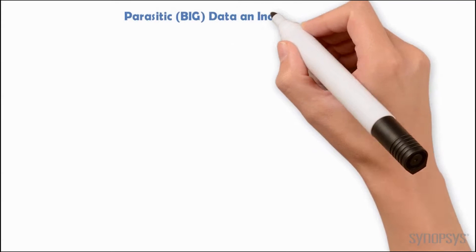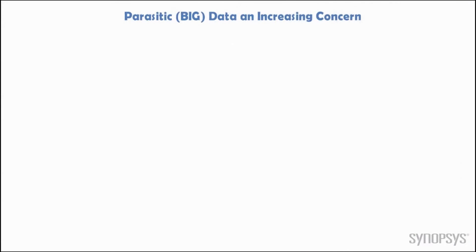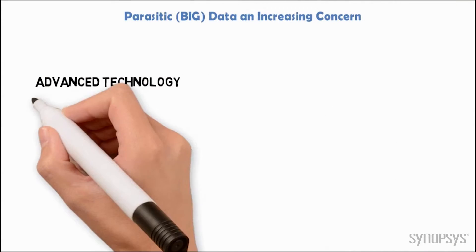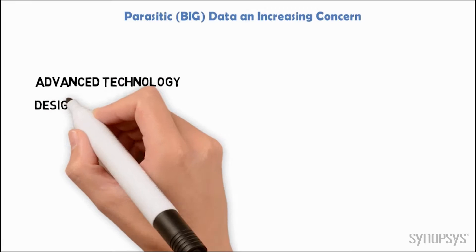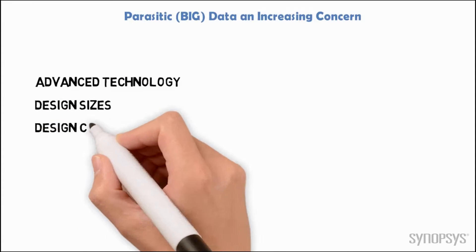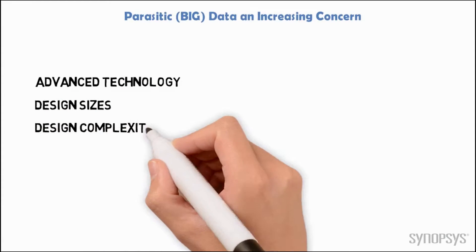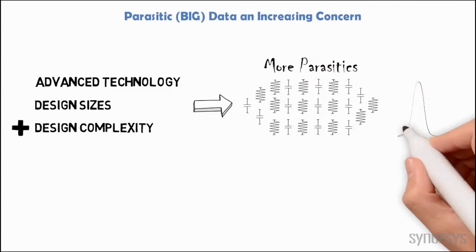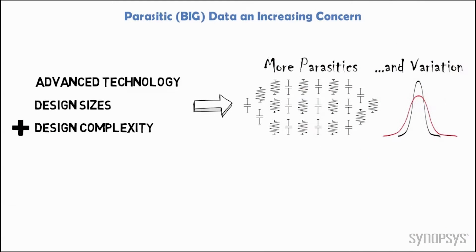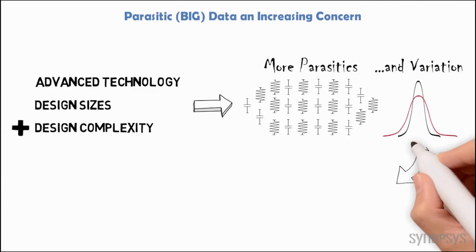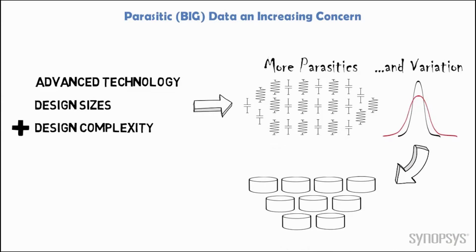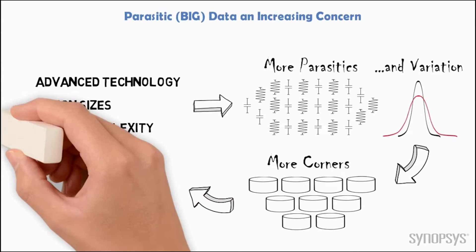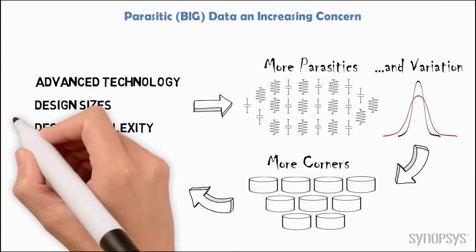Increasing parasitics are becoming a significant concern in IC design. Advancing process technology, larger designs and more complexity lead to more parasitic effects and interactions, as well as increased variation, which lead to more extraction corners required to achieve sign-off success. Also, more corners mean more runs and analysis, resulting in an amplified impact on schedule.